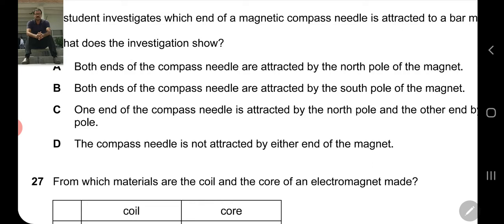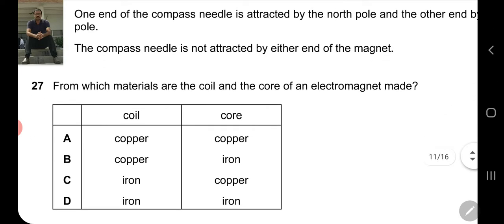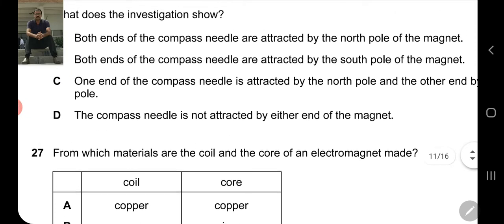Question number 27: From which materials are the coil and the core of an electromagnet made? The coil is made from copper because current passes through it, so options C and D are not possible. The electromagnet's core is made of a material that is not a permanent magnet but temporary - it shows magnetism only while current flows through it. For this, we choose iron. So which option remains? Option B is the correct option: copper wire for the coil and iron for the core.